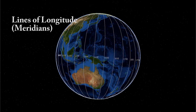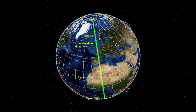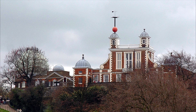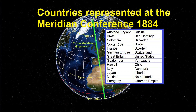Lines of longitude are also known as meridians. The starting point for reading longitude is the prime meridian, which is a line passing near the Royal Observatory in Greenwich in the United Kingdom. This site was chosen as the international zero longitude reference line by an international conference in 1884.